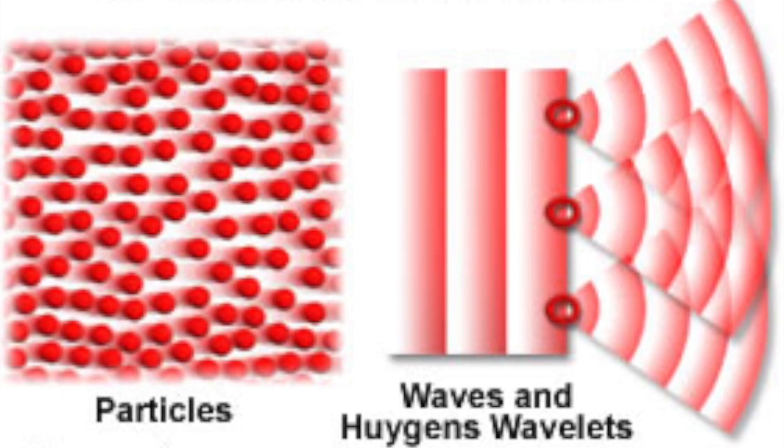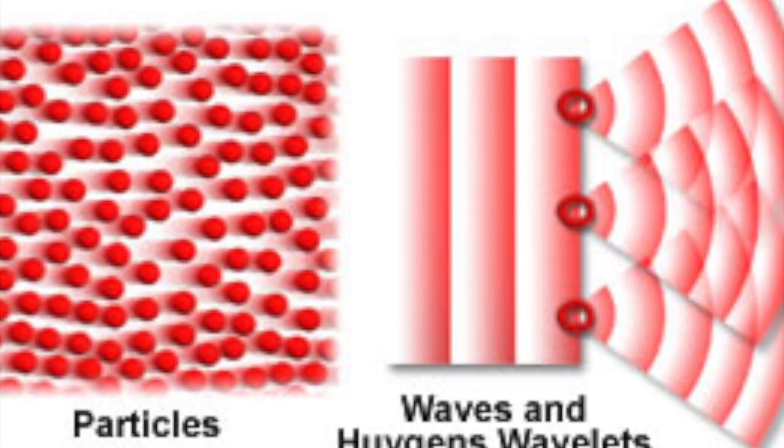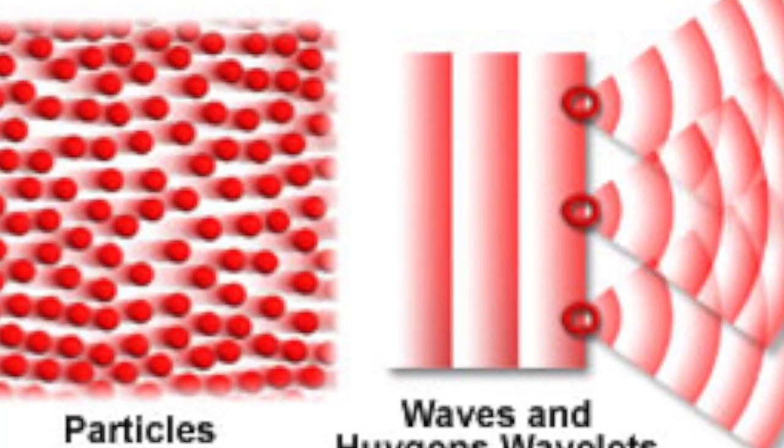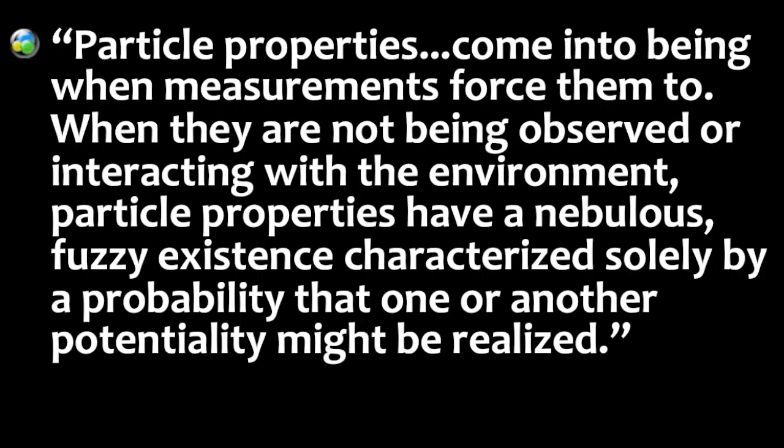In other words, the electron or photon leaves as a particle, travels as a wave, but will then manifest as a particle when it is observed by a conscious being. Brian Green wrote concerning this, particle properties come into being when measurements force them to. When they are not being observed or interacting with the environment, particle properties have a nebulous fuzzy existence characterized solely by a probability that one or another potentiality might be realized. All of this seems to imply that matter has some form of intelligence. How does the particle know it is being observed?